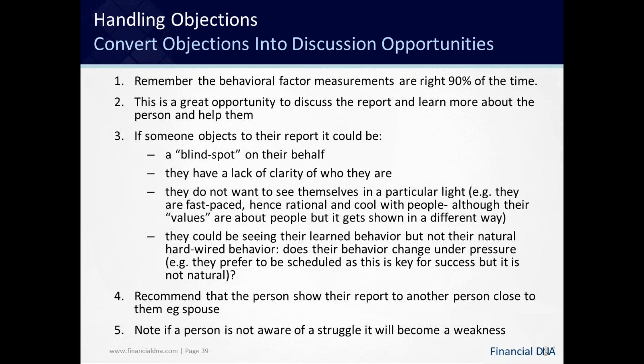At some point in dealing with clients, there will be objections. One thing we recommend to bring more safety to all of this at the start is, as you're getting more experienced with Financial DNA, deploy the reports with about half a dozen people — maybe some family members you already know and feel safe with. Then adopt this approach of asking open-ended questions and having conversations just to see where it all goes.